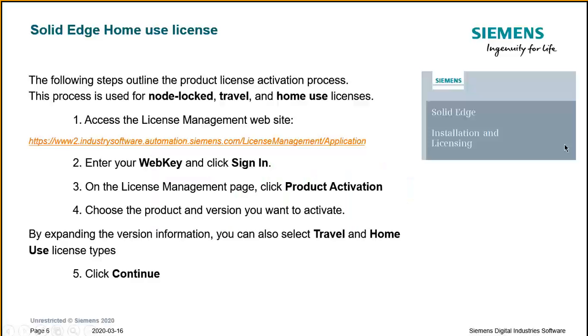Thank you, Madison. Working remotely can become a fact of life for you and your organization, so today we're going to focus on several different options to help accomplish this. First up is the home use license, which is very useful when you need to work from home. The following steps outline the process of activating this particular license. First, you need to access the license management website — you can see the link on the screen — and you'll need a WebKey account and a Composite ID number, which we'll talk about on the next slide.